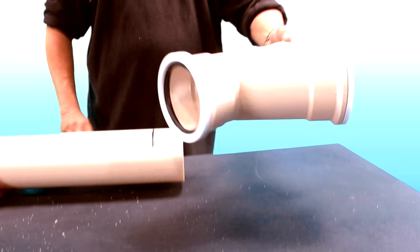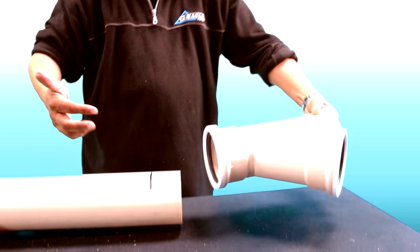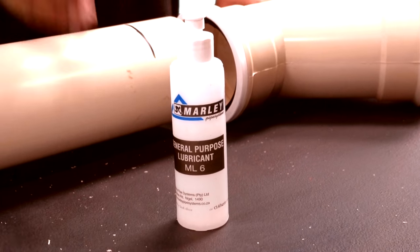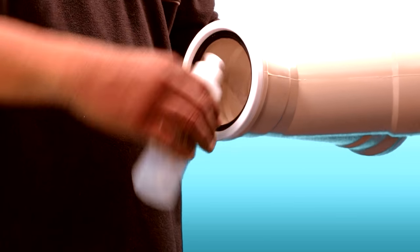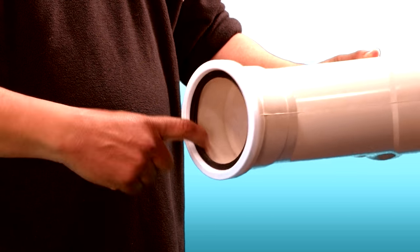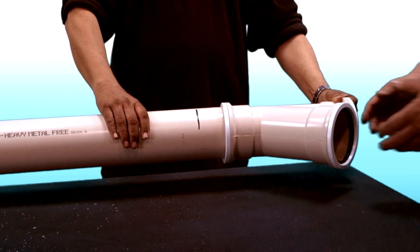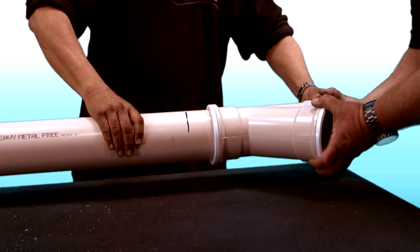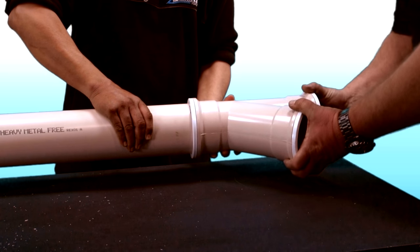Ensure that the rubber seal ring is correctly positioned in the socket recess of the fitting or the pipe socket. Apply a small amount of Marley lubricant to the chamfered spigot end and to the rubber seal ring to ease fitting. Line the pipe or the spigot end up with the socket and push firmly until the insertion depth mark is level with the face of the socket.